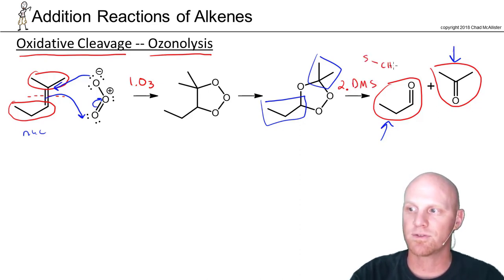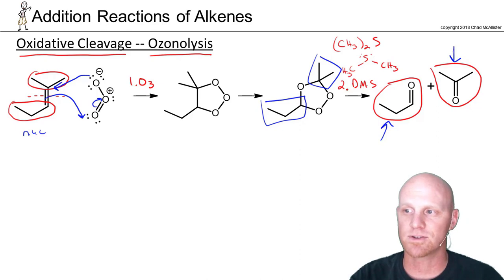You might see just DMS written out. You might see dimethyl sulfide drawn out. Or you might see a condensed structure. So CH3 to S. Any of these can be written for step two. So this is ozonolysis. We'll find out in a second. This is ozonolysis under reducing conditions.